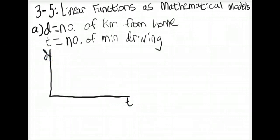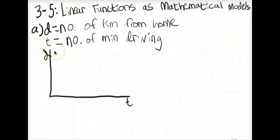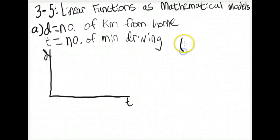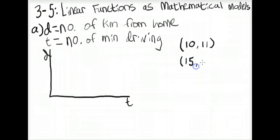They actually gave us two points. Since time is the independent variable, we label time first: the first point is (10, 11) because at 10 minutes you are 11 kilometers from home, and the second point is (15, 8) because at 15 minutes you are 8 kilometers from home. We can label those as points on the graph.